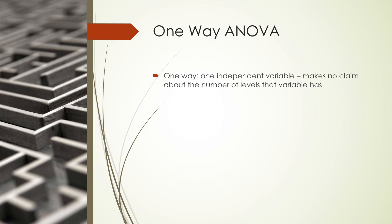We do need to keep in mind that the more complex we make our studies, the harder they're going to be to interpret and the higher the number of participants we're going to need to actually test that effect. A good rule of thumb for the number of participants you need in a between-group study is at least 30 people per condition. So if you had 500 conditions, you need 15,000 people.